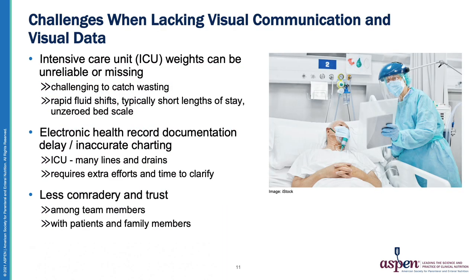Here are some examples of challenges faced by clinicians trying to perform a remote nutrition assessment in the inpatient setting. In the ICU, weights can be unreliable or even missing. This is because its patient population can have lots of rapid fluid shifts, and they typically have shorter lengths of stay in the ICU, or sometimes bedside scales are not zeroed before use. It's really hard to catch wasting if you're not laying eyes on these patients. By the time a dietician working remotely can get a visual, the patient may already be malnourished or have an increasing severity of malnutrition. Had the dietician been on-site, they likely would have caught wasting earlier and prevented it.